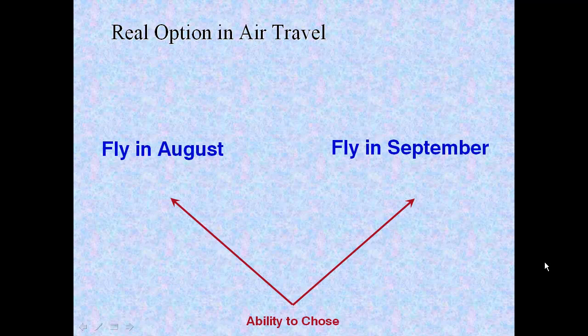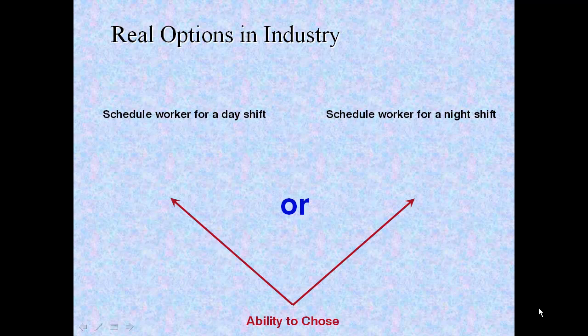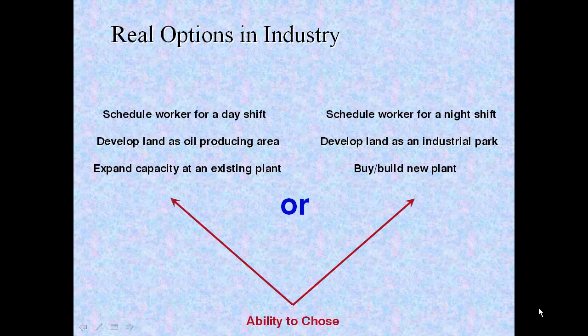So this is the real option. Choose August travel, September travel, or some other date. Industrial companies enjoy multitudes of real options in their business operations. For example, schedule workers for a day shift or schedule workers for a night shift. Management's flexibility in scheduling its workforce is key to productivity and efficiency. Labor contracts and government regulations can limit that flexibility. It is in management's interest to preserve their flexibility as it has real option value. Develop land for oil production or develop that same property as an industrial park. Any asset that has dual or alternative uses has real option value. Expand capacity at an existing plant or buy or build another plant. A plant having the infrastructure that allows for expansion provides real option value to a company.